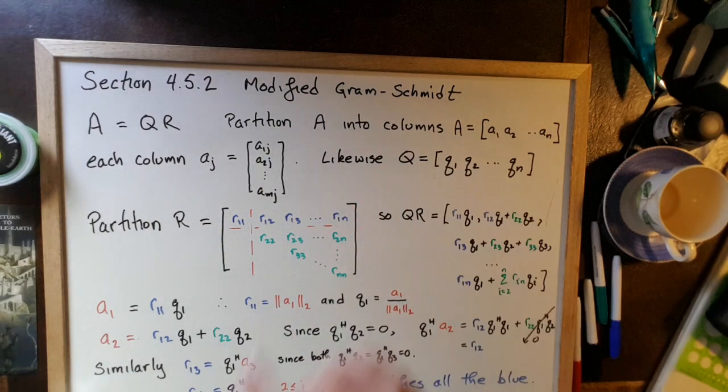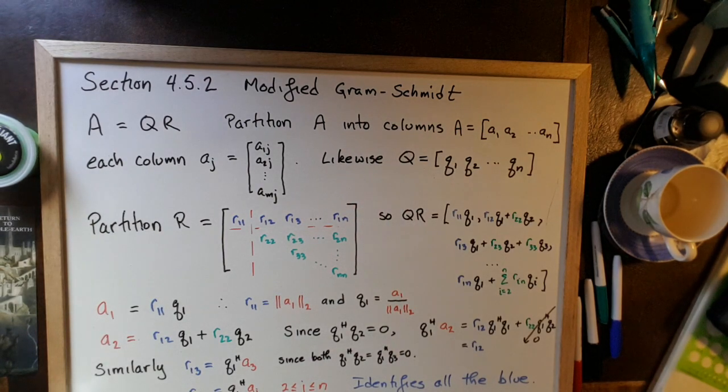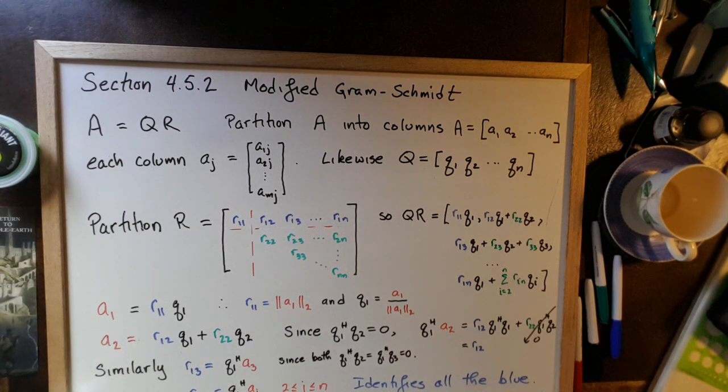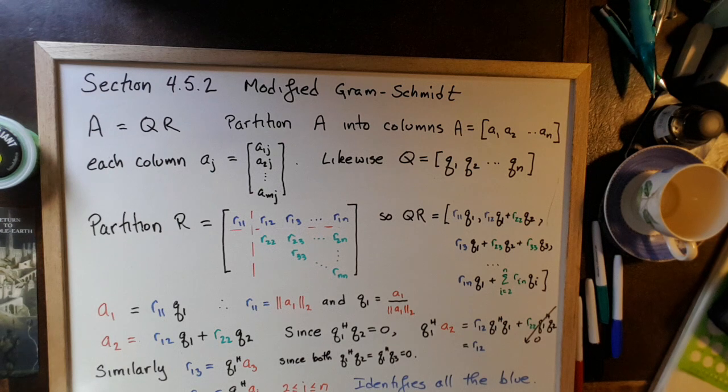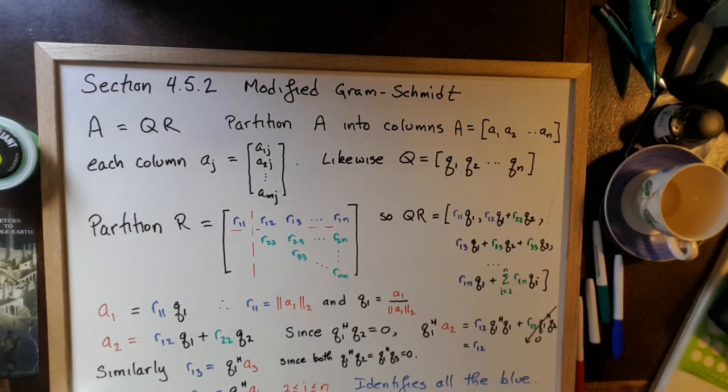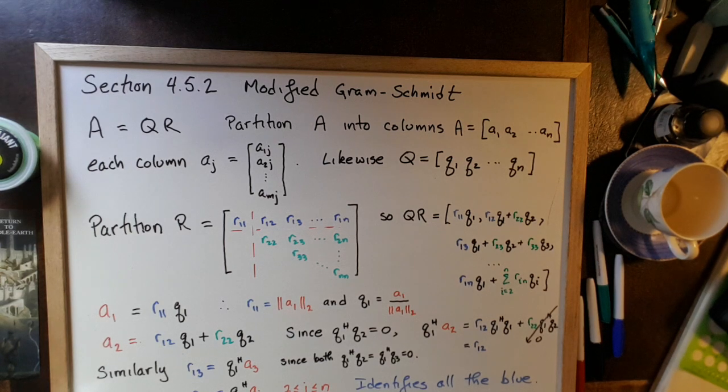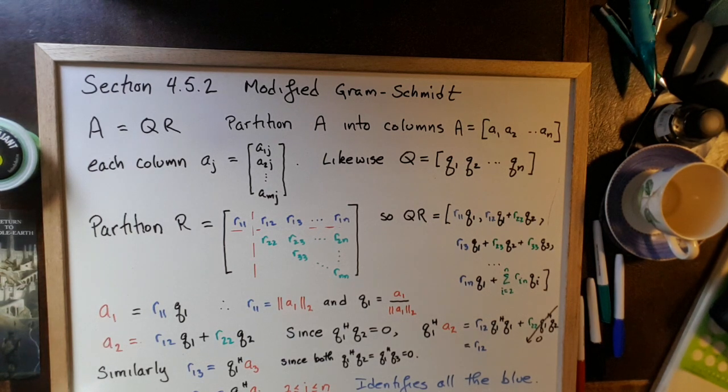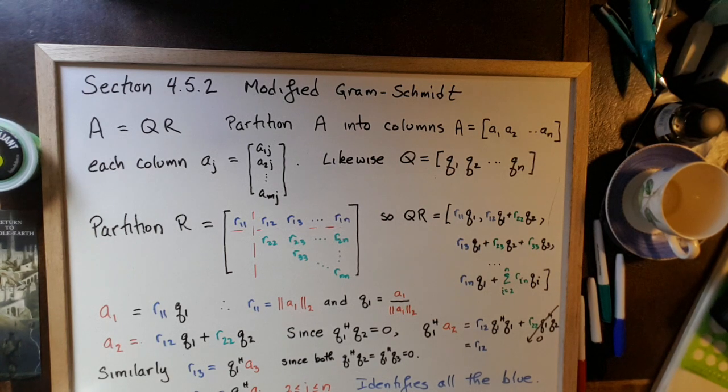Some of you have been taught the Gram-Schmidt method, and in section 4.5.1 we showed in the text, which I haven't talked about in a video, section 4.5.1 demonstrates that Gram-Schmidt is numerically unstable, does not produce an orthogonal matrix Q, or a unitary matrix Q if the matrix A is complex. Modified Gram-Schmidt is better.